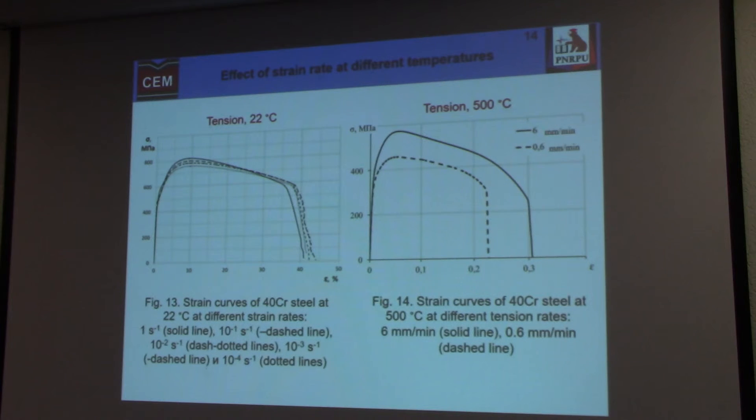During the test we realized that in condition of room temperature it's not a big difference when we realized different strain rates. But at high temperature, for example 500 degrees, we have big differences in post-critical behavior when we use a different rate of tension. So it means that rheological behavior of steels take place.